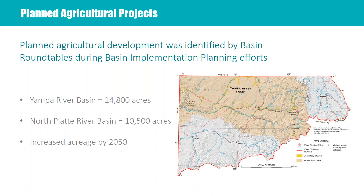The next factor we looked at was planned agricultural projects identified in certain basins. In the Yampa River Basin and the North Platte River Basin, their basin implementation plans identified specific areas and projects where they plan to increase agricultural production. These numbers are slightly less than SWSI 2010 because the basins refined the numbers they had originally provided and tied them to specific areas and acreage values. This would be a direct increase to irrigated acreage in these two basins.